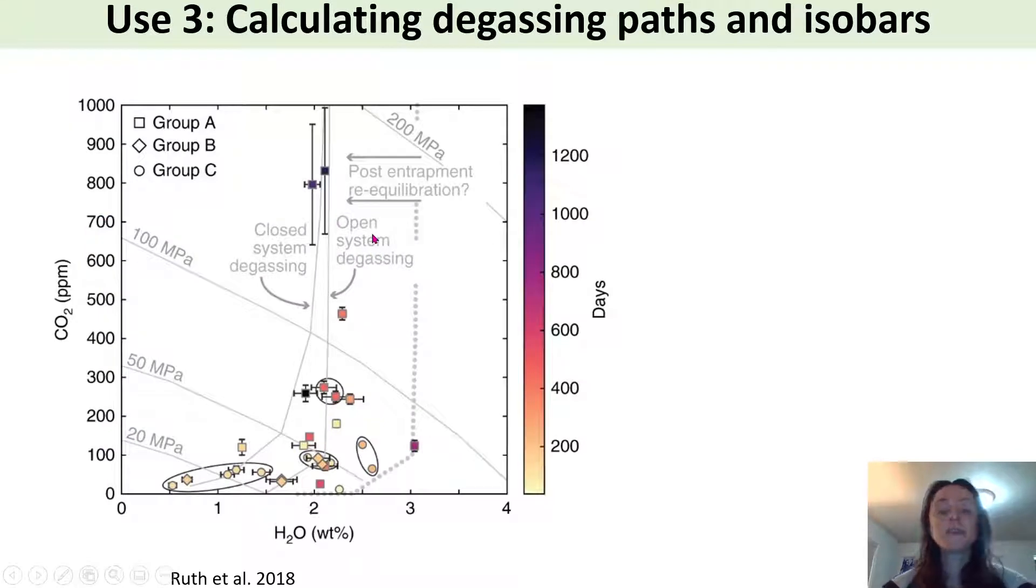And then the third popular use of these models is to calculate degassing paths and isobars. So simply isobars show basically the amount of CO2 and water that would dissolve at a constant pressure, a constant temperature for a constant melt composition.